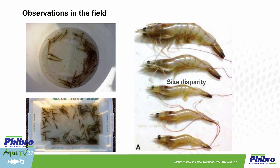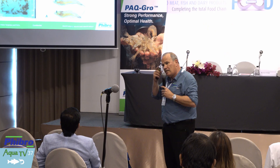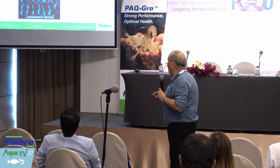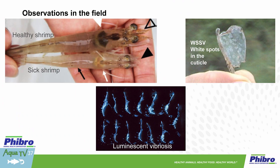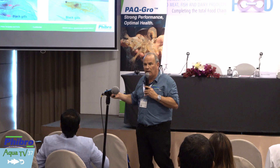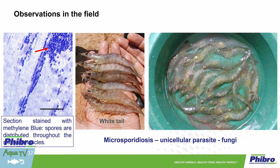Size disparity — we want to have homogenous populations. If we see this, it needs to ring a bell to us and to the farmer we are working with. Sick fish, sick shrimp, empty intestine — you see here the hepatopancreas being pale versus a healthy animal. White spot disease in shrimp — you don't need to be a great expert, but this is all part of a process we follow with our clients worldwide as we walk into these facilities. We look at the pleopods and the gills of the animals; black rims on gills or a cramped tail are all indications that something is very wrong in the population.